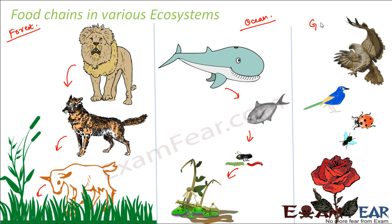In a garden ecosystem, plants are the producers, eaten by small insects like green flies. These green flies are eaten by small birds like the ladybird, and these small birds are eaten by bigger birds like the hawk. In a similar way, you can identify food chains existing in any ecosystem.